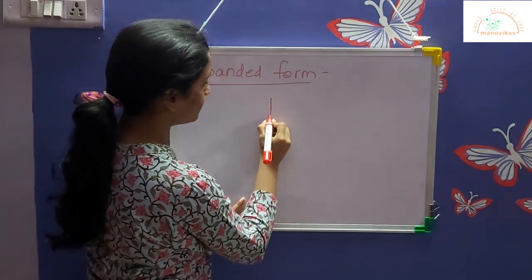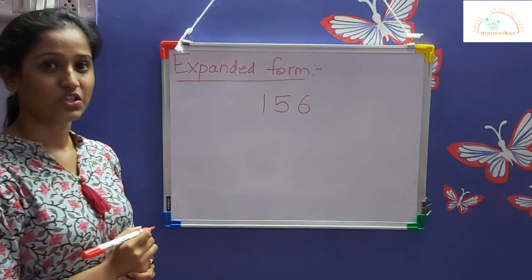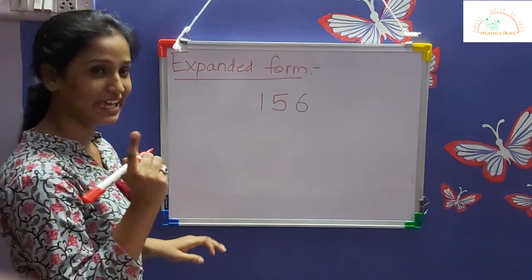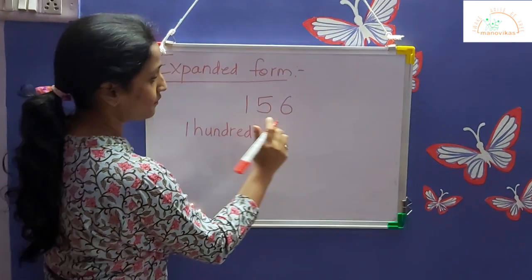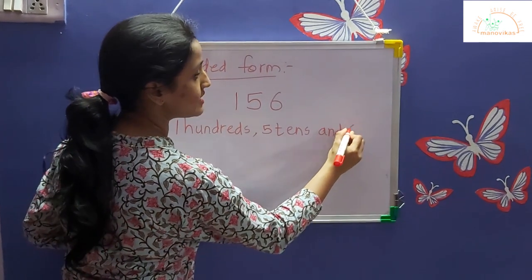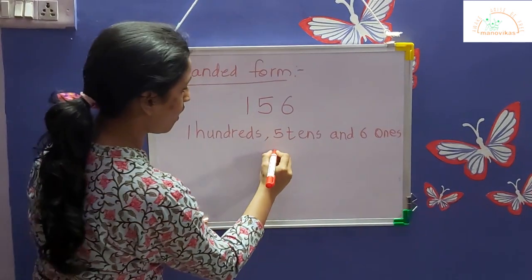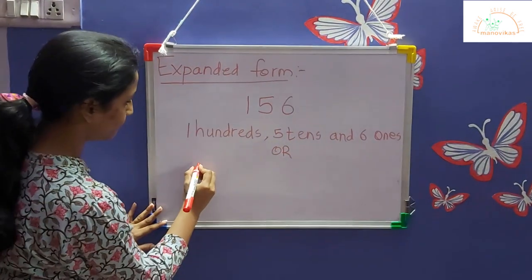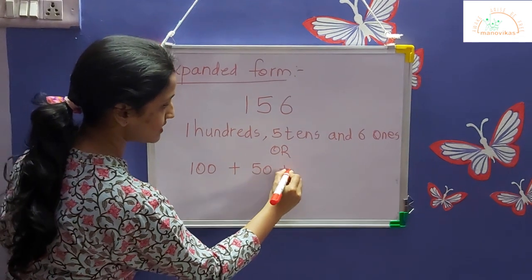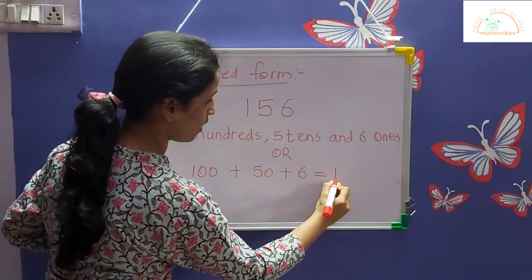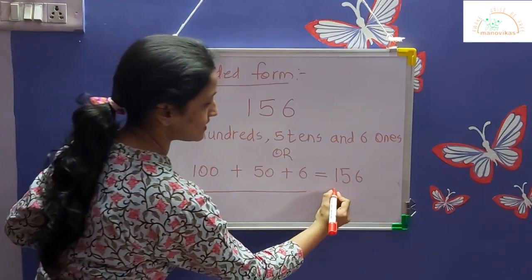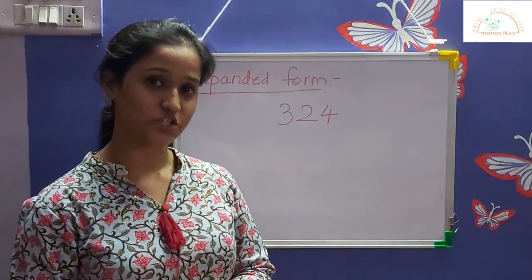We have the number one hundred and fifty-six. Try to guess how you will write the expanded form. We write 1 hundred, 5 tens, and 6 ones, or we can write it as 100 plus 50 plus 6, which is equal to 156. This is the expanded form and this is called the standard form.